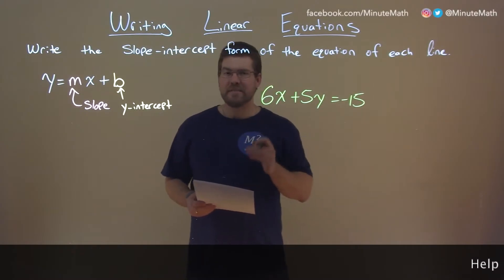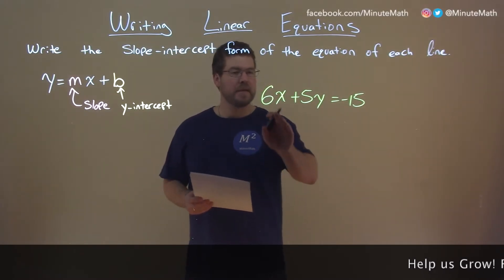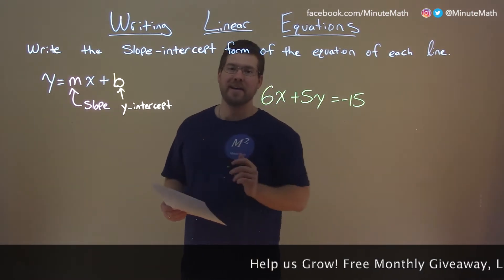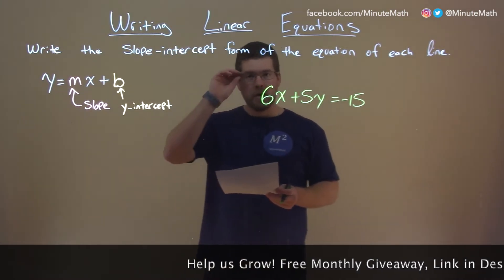So if I was given this problem, 6x plus 5y equals negative 15, and I want to write that in slope-intercept form. So first step here,